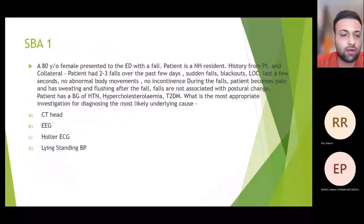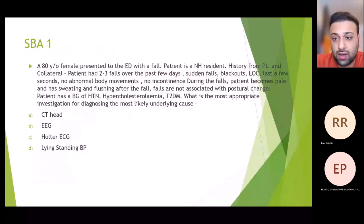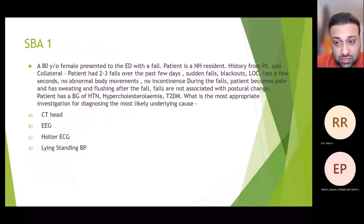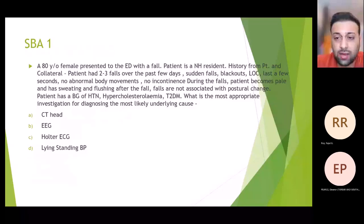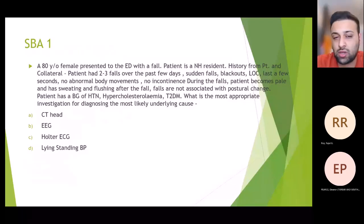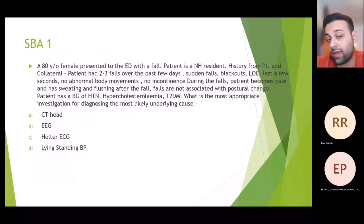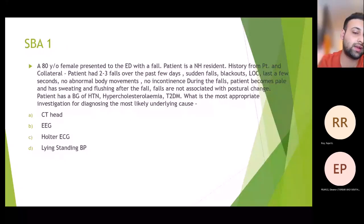First SBA question: an 80-year-old female presents to ED with a fall. She is a nursing home resident. History from the patient and collateral reveals two to three falls over the past few days, with blackouts and loss of consciousness lasting a few seconds, no abnormal body movements, no incontinence. The patient becomes pale with sweating and flushing after the fall. Falls are not associated with postural change. Background of hypertension, hypercholesterolaemia, and type 2 diabetes. What is the most appropriate investigation to find the underlying cause?